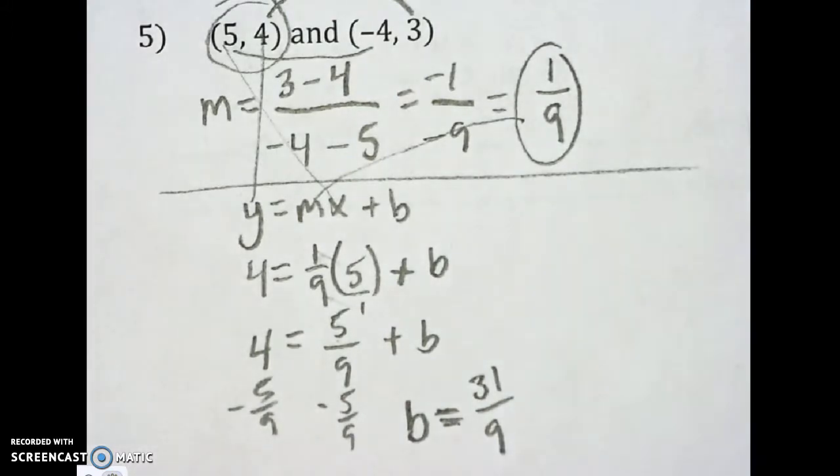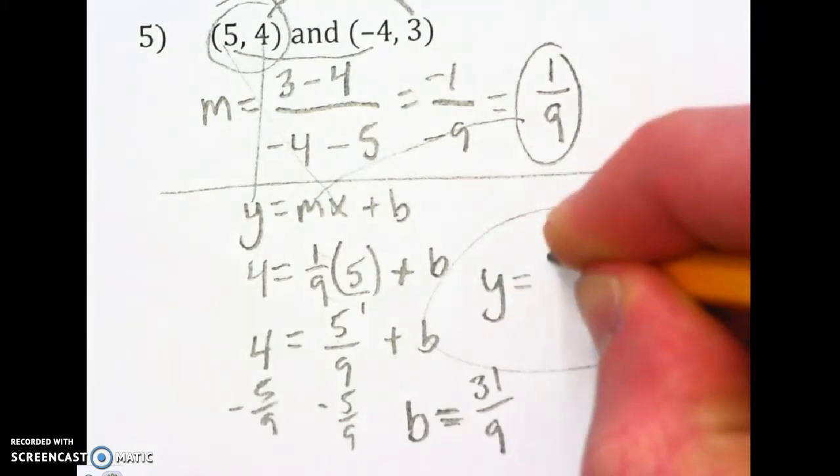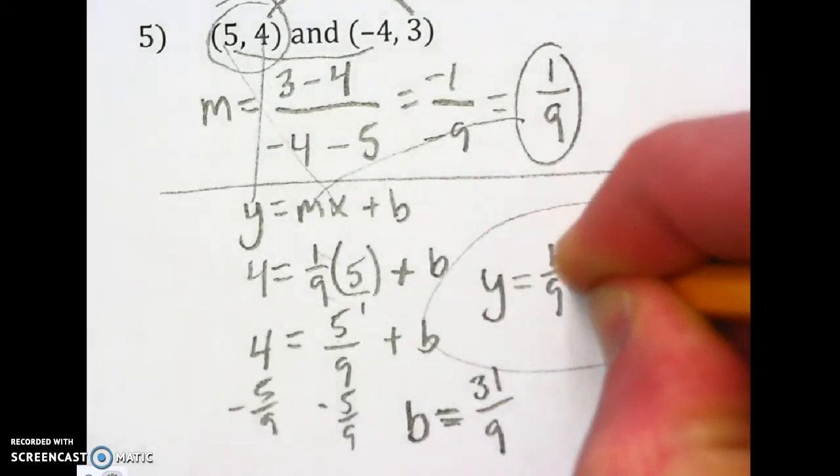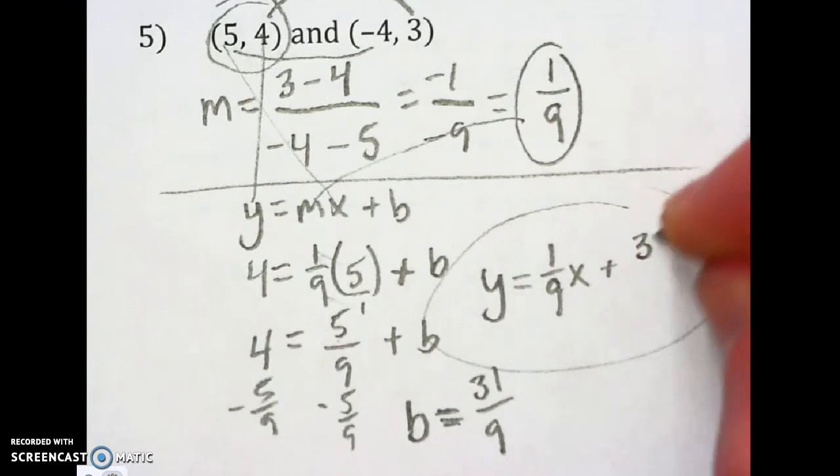And we'll write our equation right here in this space right here. Y equals our slope times x plus the y-intercept. 31 over 9.